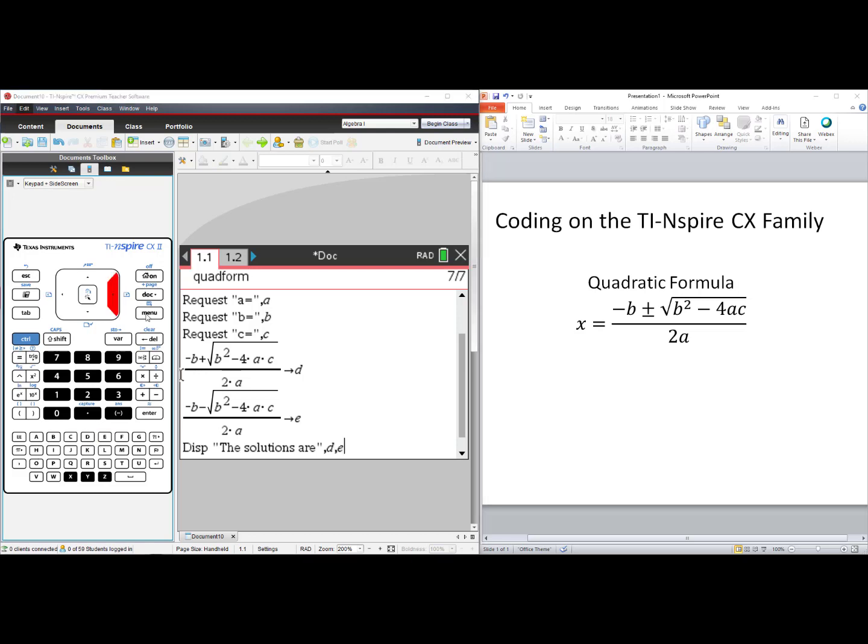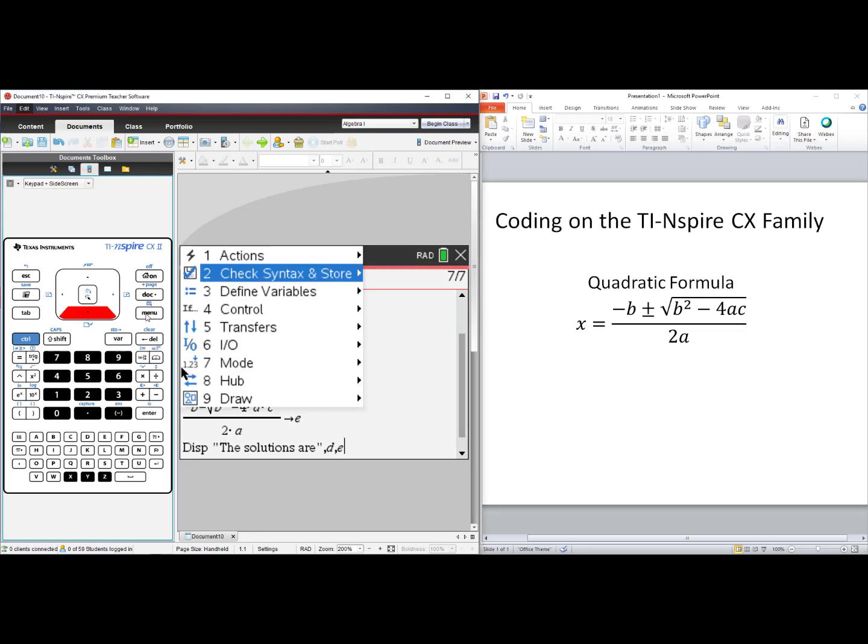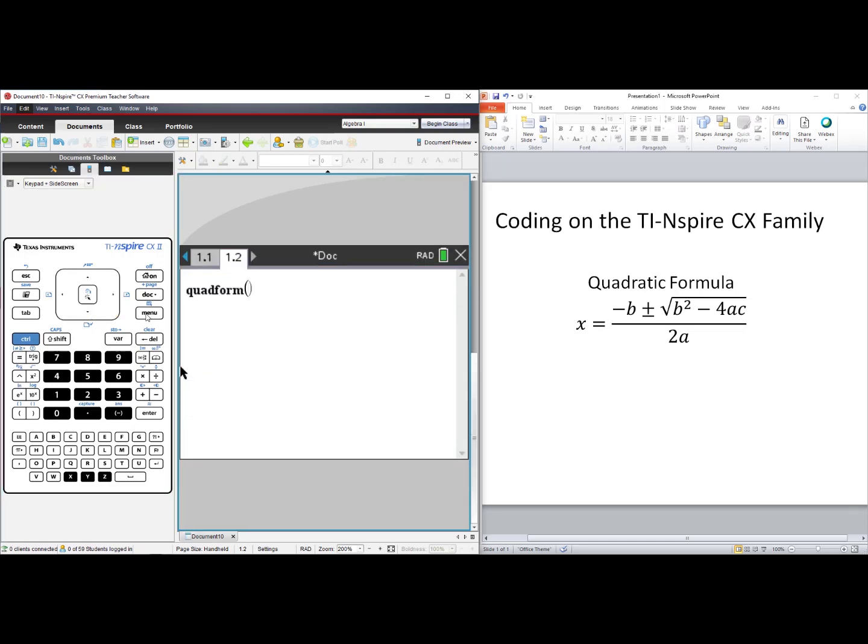We are now ready to run our program. Press Menu, choose number 2, Check Syntax and Store, choose number 3, Run. When we press Enter to run our program, we see our text box: Enter A, B, and C from Ax² plus Bx plus C equals 0.